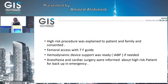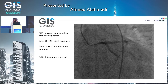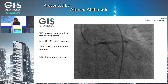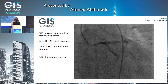What we have in our cath lab is an intra-aortic balloon pump, so it was needed. Anesthesia and cardiac surgery were informed about the high-risk patient for backup in emergency. The RCA was not dominant from the previous angio, so we didn't go for it. We picked up a diagnostic catheter — left 5 French.